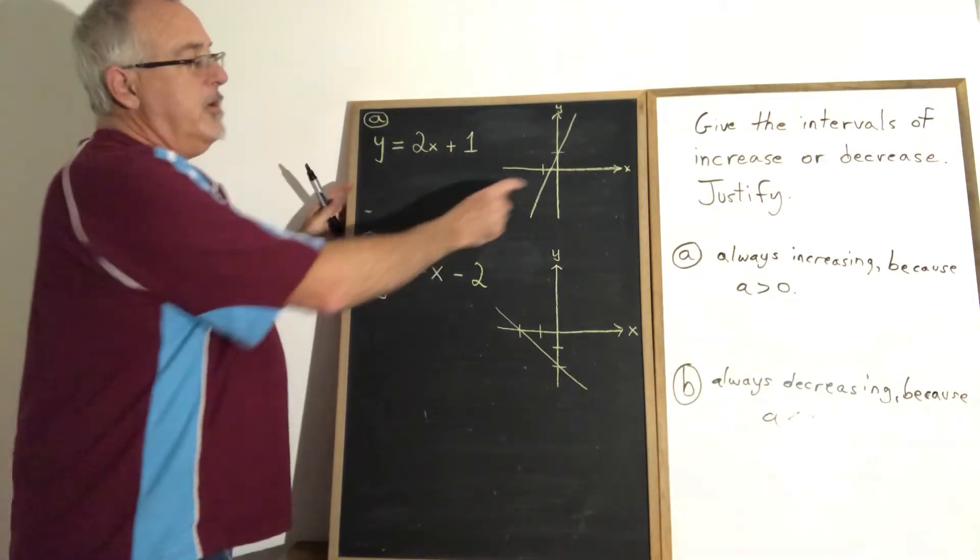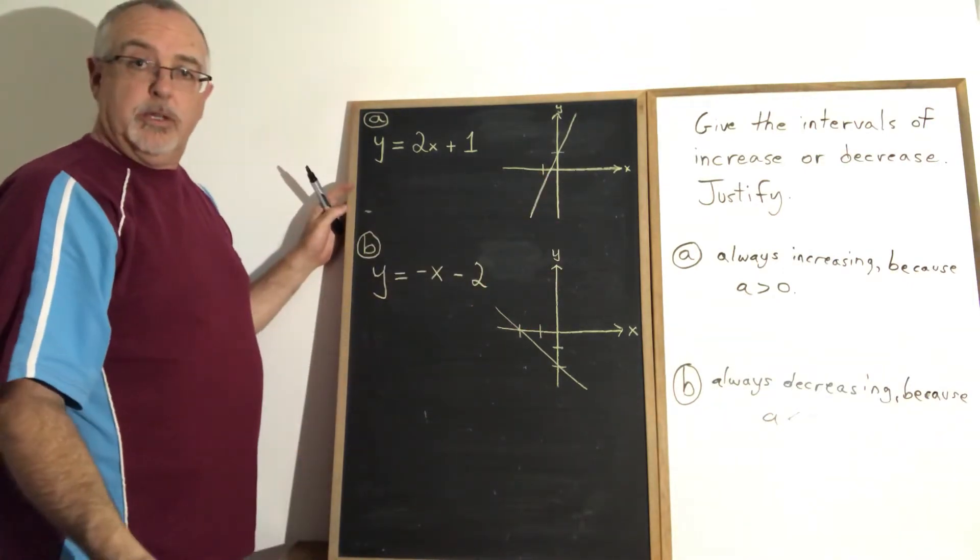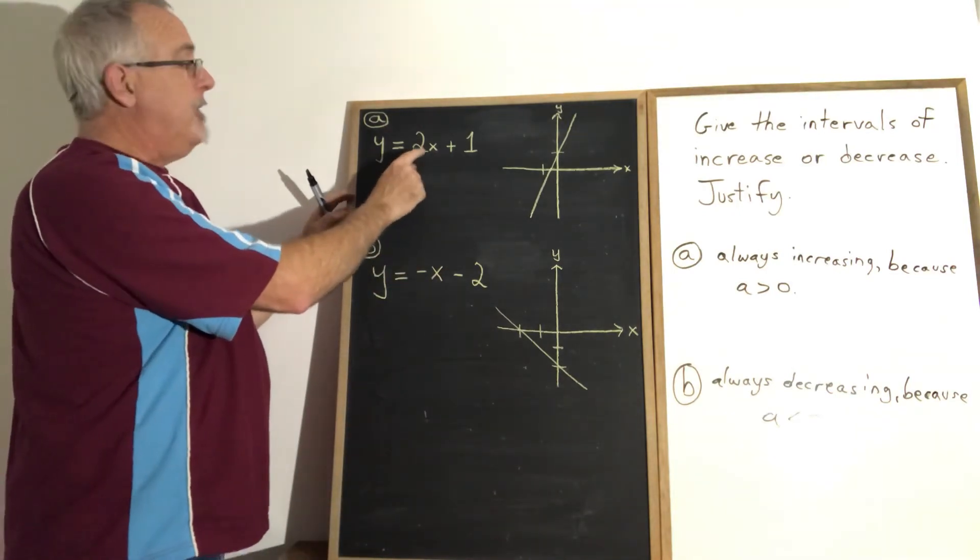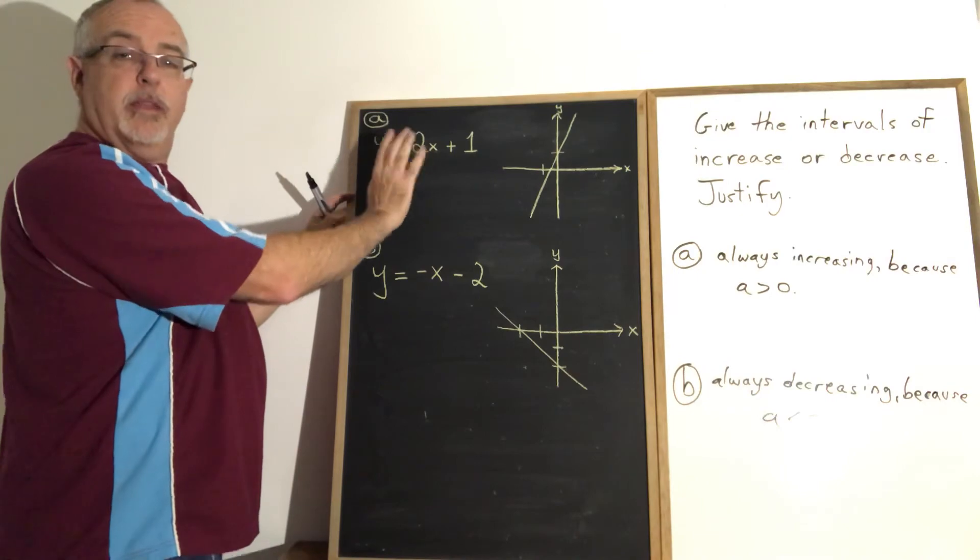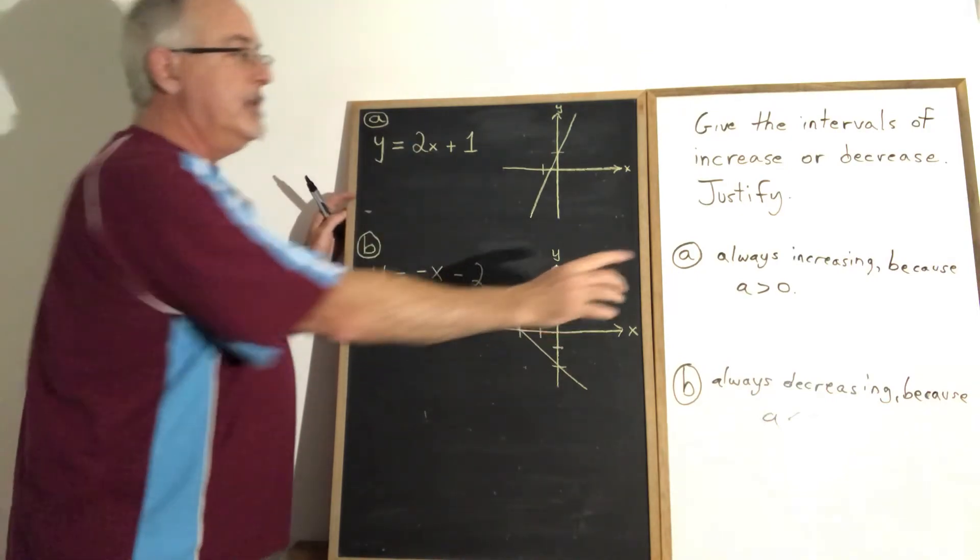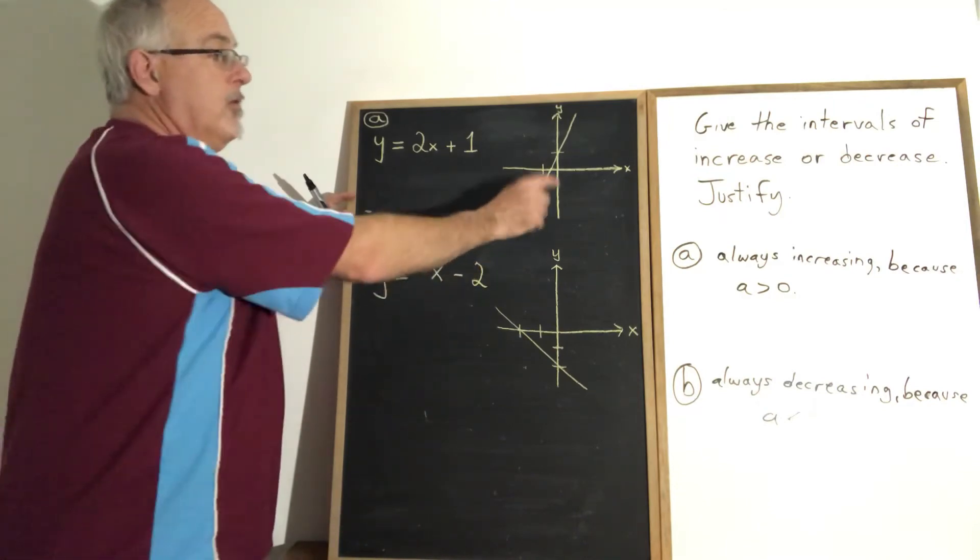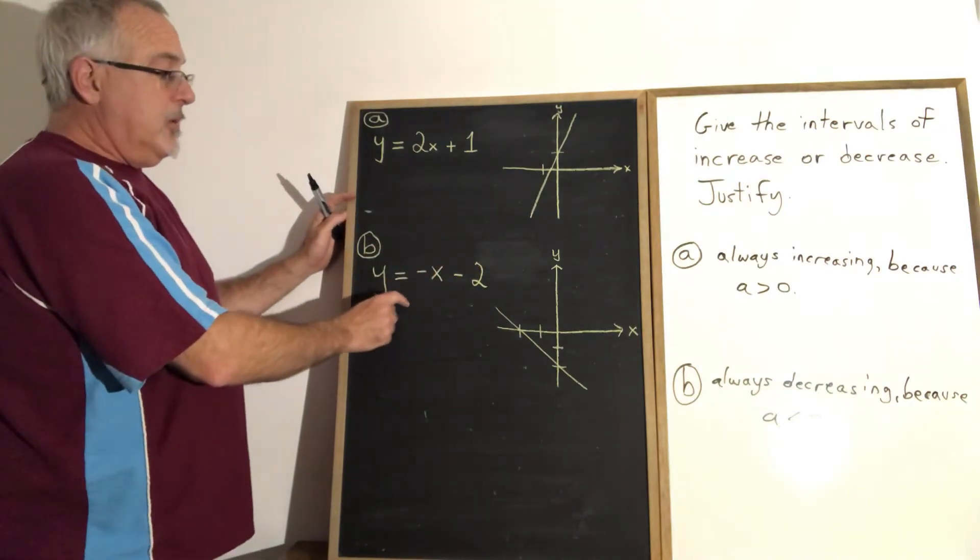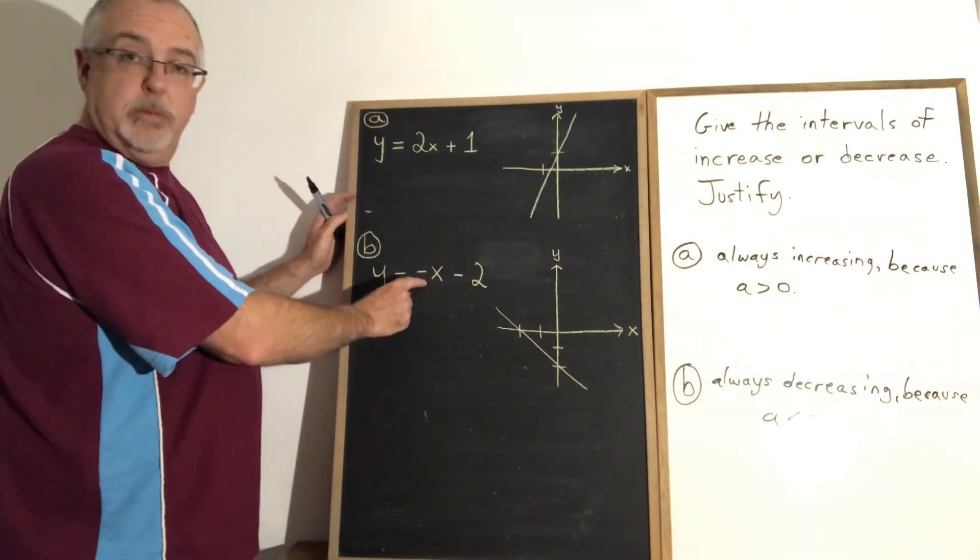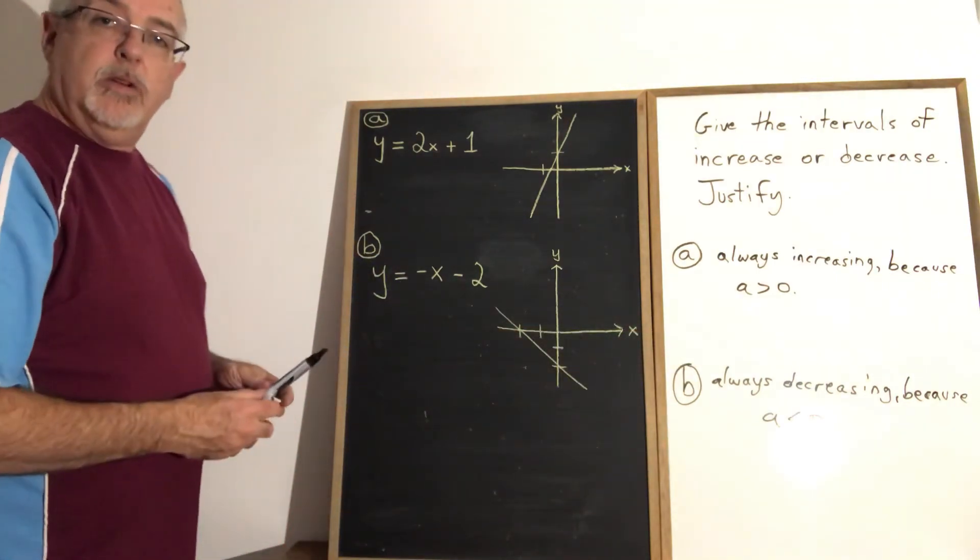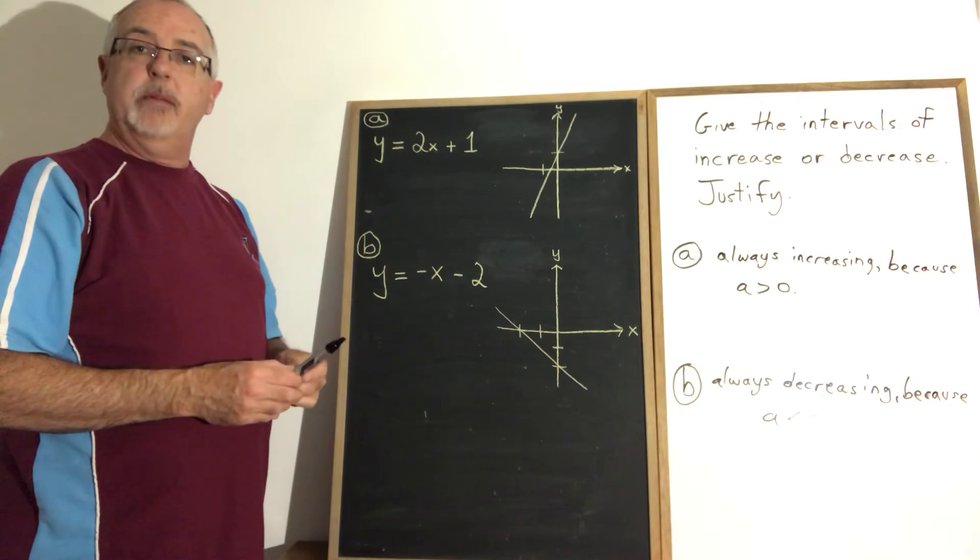So it turns out we don't really even need the graph to answer the question. When I look at the equation in y equals Ax plus B form, I can see that the slope is positive. Therefore, this line will always be increasing because A is greater than zero. I can give my answer without graphing it. And with this one, I can see my A is negative. The slope is negative. Therefore, it will be always decreasing. That is today's Daily Dose of Math. Please like, subscribe and share.